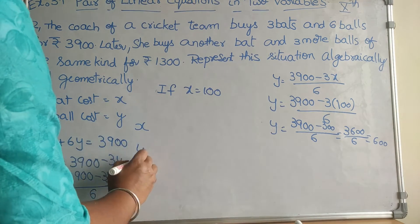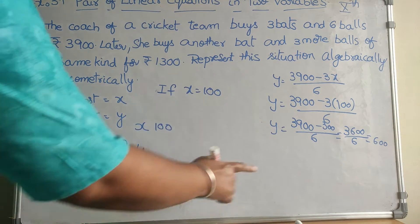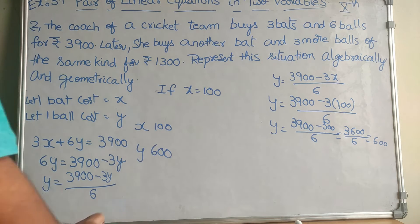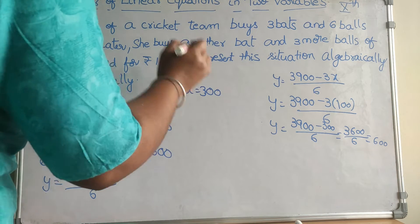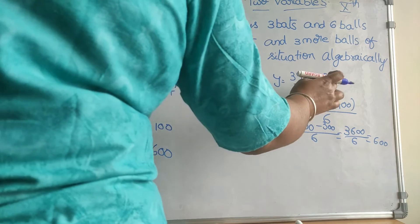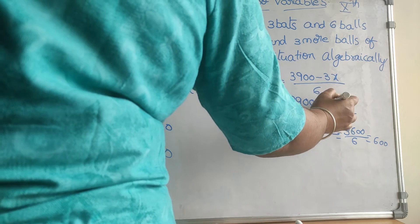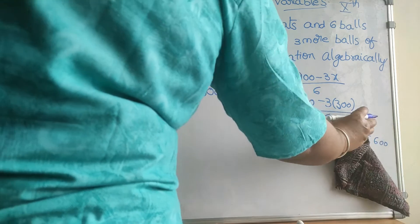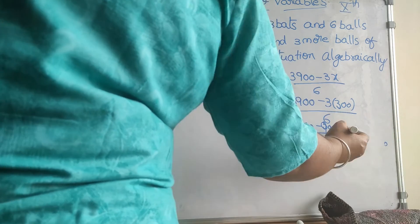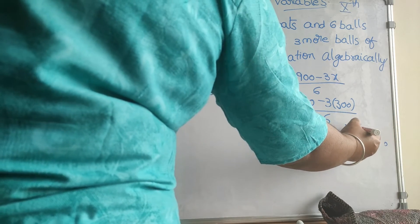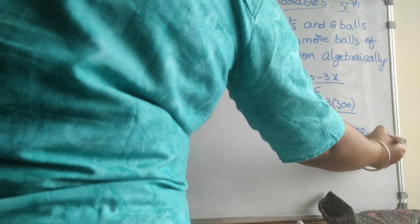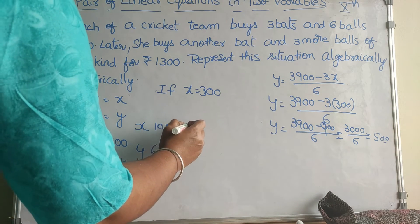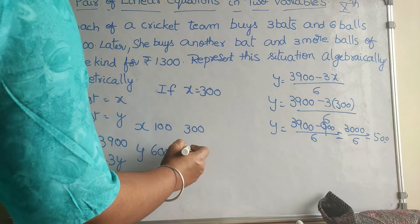If x = 300, then y = (3900 − 900) / 6 = 3000 / 6 = 500. So when x is 300, y is 500.